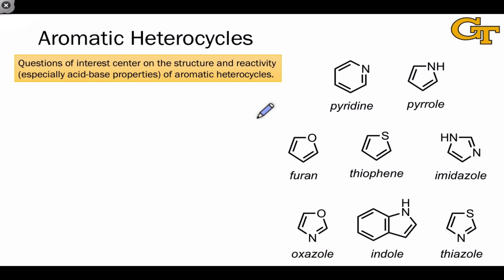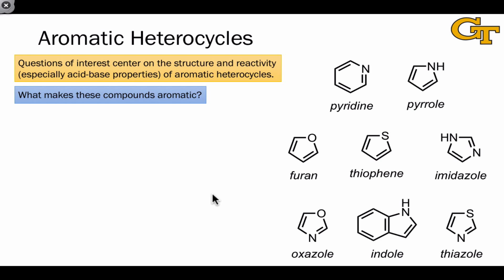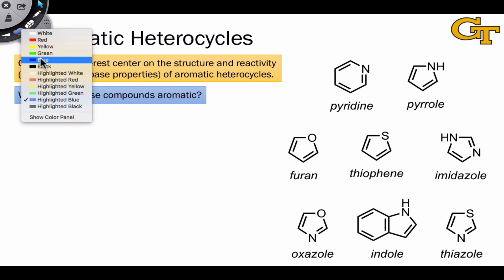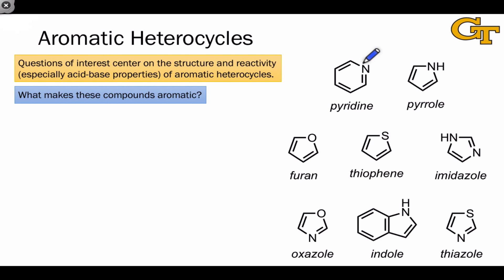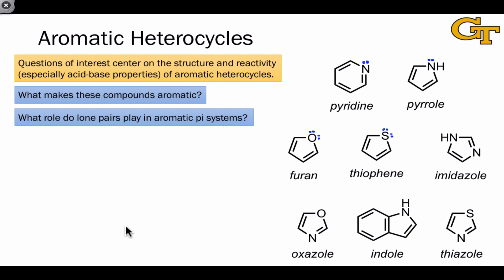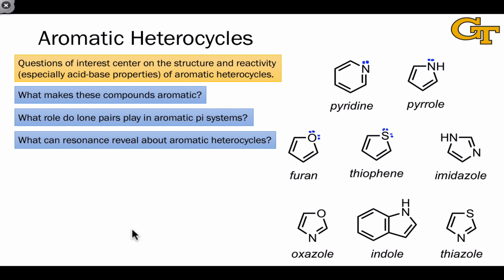What are the questions of interest when we look at an aromatic heterocycle? One important question is what makes these compounds aromatic. The presence of lone pairs on the heteroatoms makes the question more interesting, because we have to critically evaluate whether the lone pair is part of the pi system or not. In a case like oxygen or sulfur, where we have two lone pairs, are both part of the pi system, or only one, or neither? The question about the role of lone pairs is especially important in an aromatic heterocycle context.